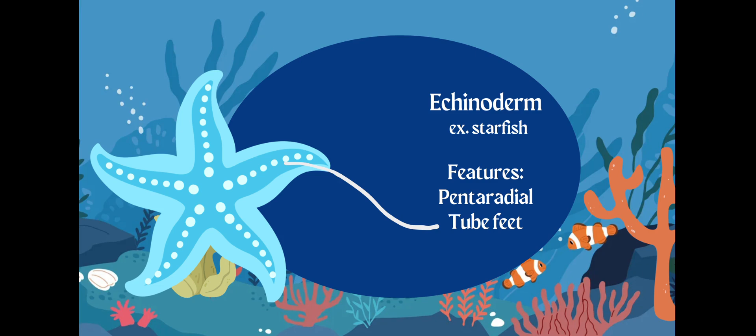Let's first start with echinoderms. You should know the phylum echinoderm. Echinoderms are going to be like our starfish — they're also going to be sea cucumbers. Features you need to know about echinoderms: they are pentaradial and they have tube feet. Our example is a starfish, and they're pentaradial, meaning they have five arms, and their tube feet will actually suction water into their circulatory system.